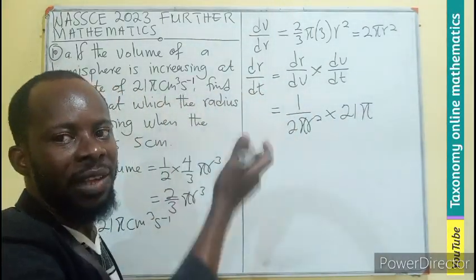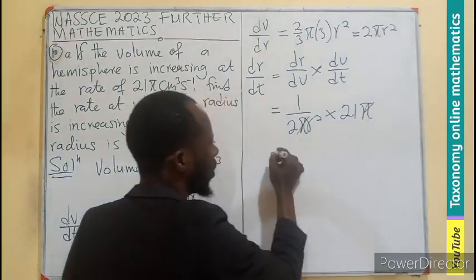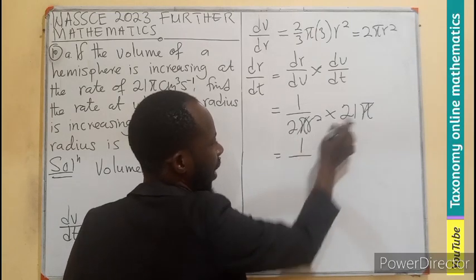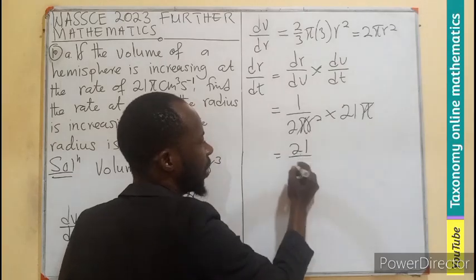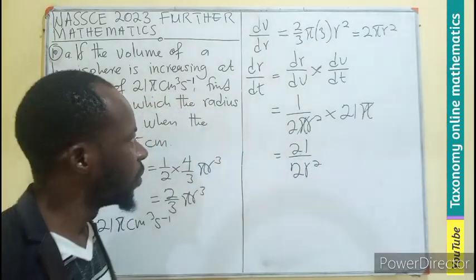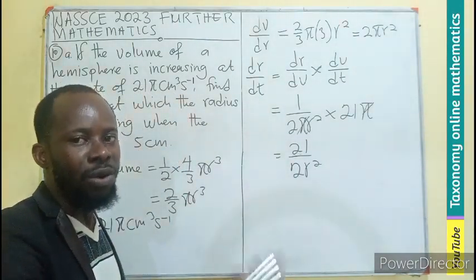21π is the numerator. It's multiplying 1. So therefore, π and π will cancel. Then I will be left with 1/2. So I think this is 1 times 21, so 21. Then we have 2R². So this is what we are having as the rate of change of the radius.